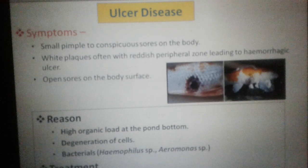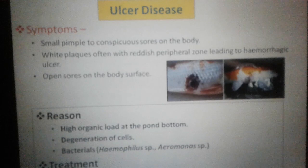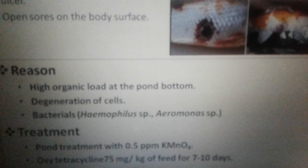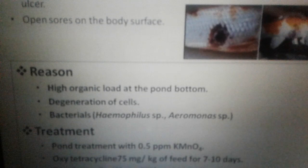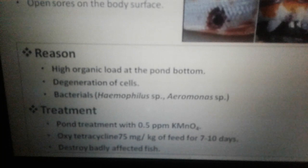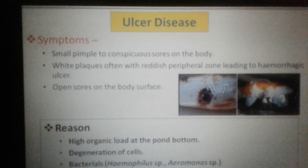Ulcer disease begins with pimple-like projections that transform into ulcers which can go up to the internal organs. It is caused by high organic load and bacteria, mainly Haemophilus or Aeromonas species. Treatment can be done with K-MnO4, oxytetracycline, or by destroying badly affected fish.